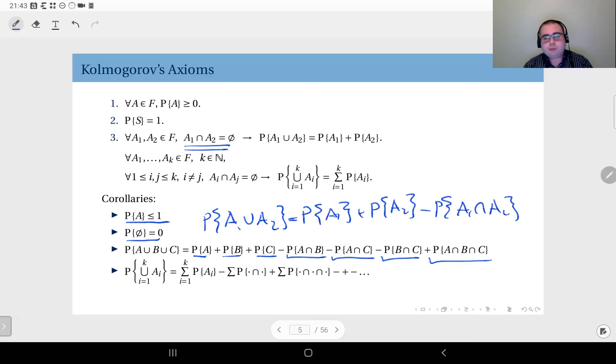This is somewhat similar to the inclusion-exclusion principle we have seen in counting techniques, and this is the form we're using in probability theory. Again, this can be generalized to the union of k events A1 through Ak. You have the sum of the probability of the singletons, minus the probabilities of the intersections of pairs, plus the intersection of triplets. Minus, plus, minus goes on like that depending on k—you might have many, many terms here.